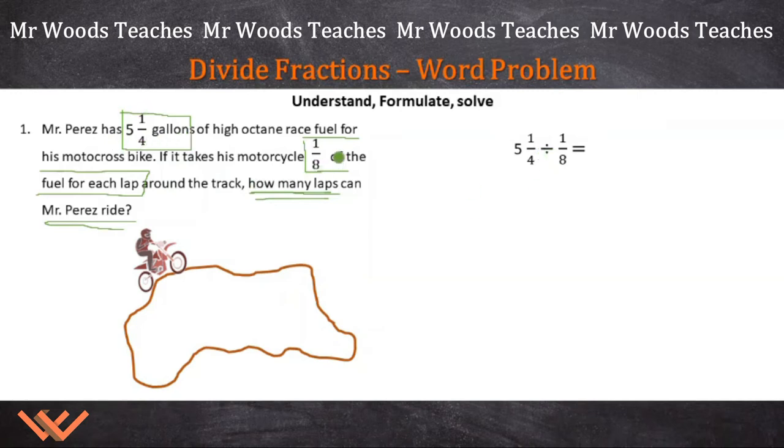And we're dividing it by 1/8 because that's how much fuel it takes to go around one lap. How do we work this out? Because this is a mixed number and this is just a regular fraction.